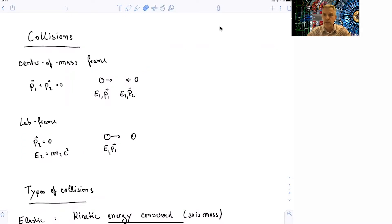I've already seen collisions in the study of momentum conservation in previous sections. So here we can have collisions, and we can describe them in the center of mass frame, for example, where the total momentum is equal to 0. So in case of the collision of two particles, the momentum of particle 1 plus the momentum of particle 2 is equal to 0.